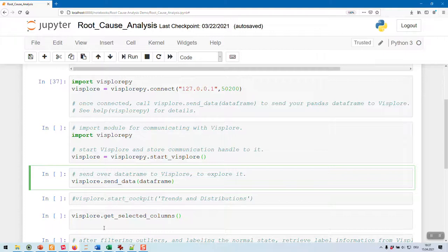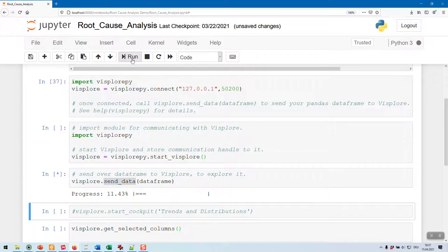Here, I have loaded a set of process data as a data frame. From Python, the user can now send data directly to Visplore via an API. You can see here the send data command. It does just that.